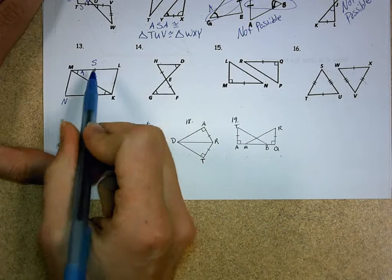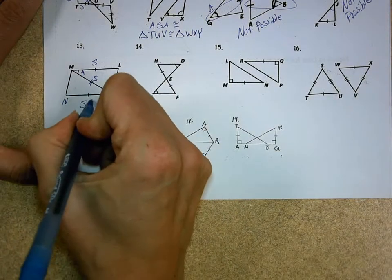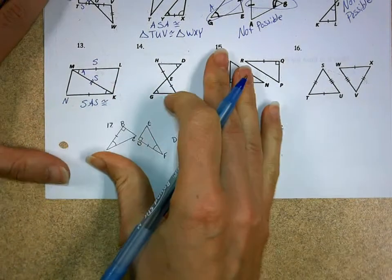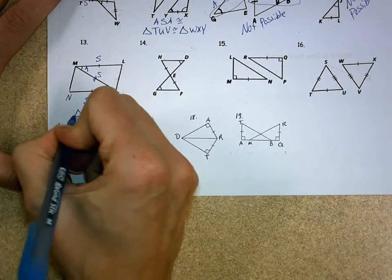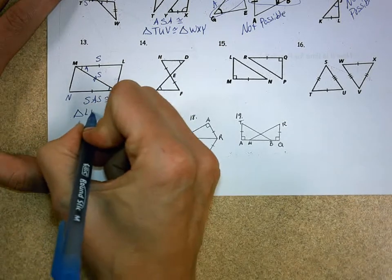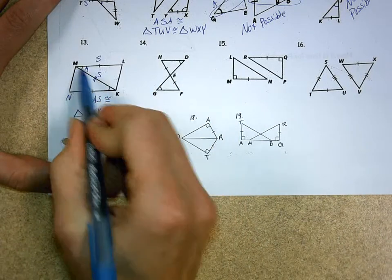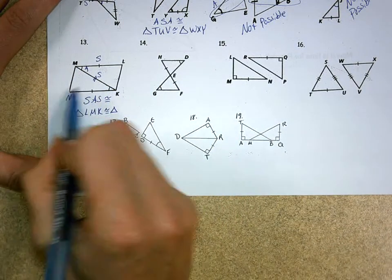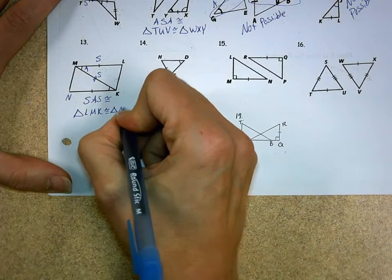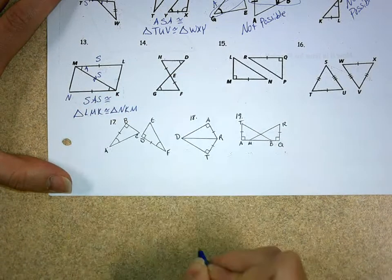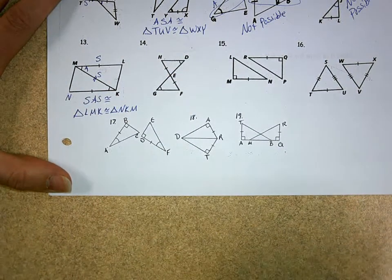Well, look how that spells now. Side, angle, side. So, that's by the SAS congruence that works. That means I have triangle LMK is congruent. If I go LMK, that means I need to go NKM. So, we've got to make sure those work together. Good job.